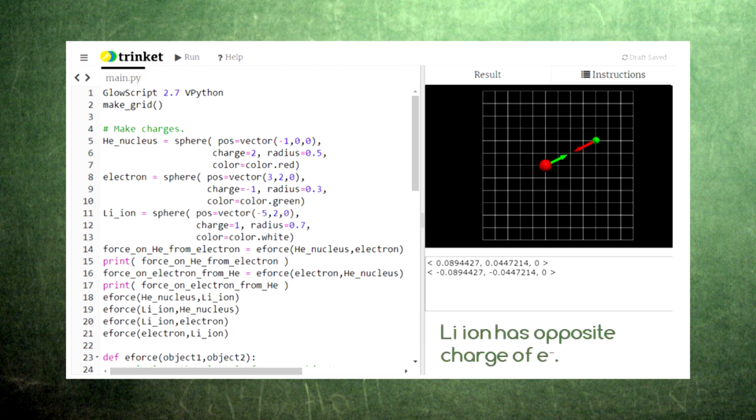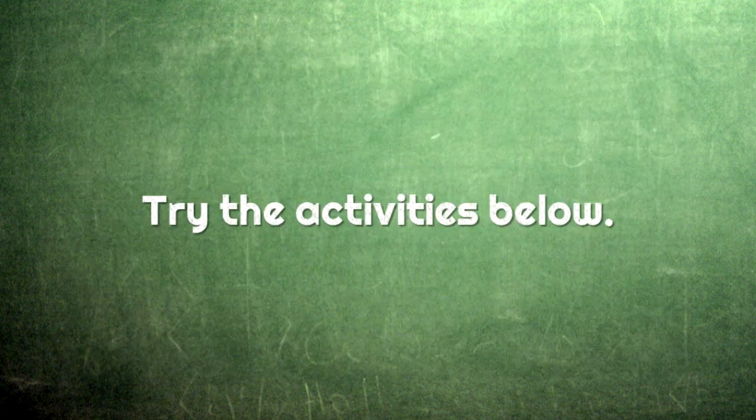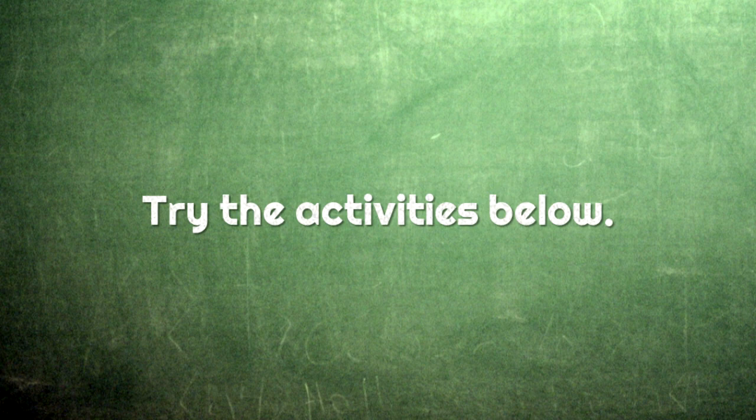Suppose we now add a lithium ion that has the exact opposite charge of the electron, and we place it the same distance away from the helium nucleus. We can now add calculations of the electric force from the lithium ion to the helium nucleus and from the helium nucleus to the lithium ion. From this new diagram, we can see that the helium nucleus is experiencing two forces: one from the electron and one from the lithium ion. Although these forces are equal in magnitude, one is a repulsive force while the other is attractive. This diagram also shows us that we are missing a pair of forces. We don't have any arrows pointing between the electron and the lithium ion. The activities at the link in the description below will walk you through the process of adding these forces and learn about how the electric force works.